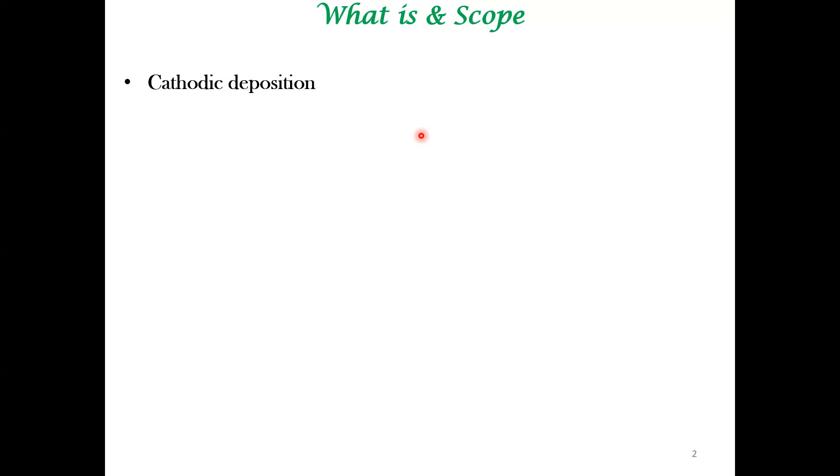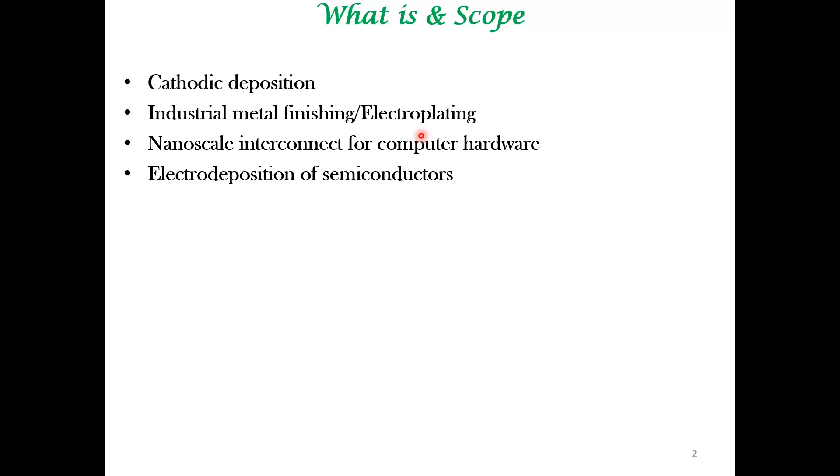This field goes by many names. The traditional name for this is industrial metal finishing or electroplating. This has very important technological consequence and it's been practiced over many decades. It's widely practiced industrially. But it also has a lot of new applications, very modern applications. Electrodeposition is involved in deposition of nanoscale interconnect in the context of computer hardware. A lot of modern techniques have also been developed for depositing semiconductors.